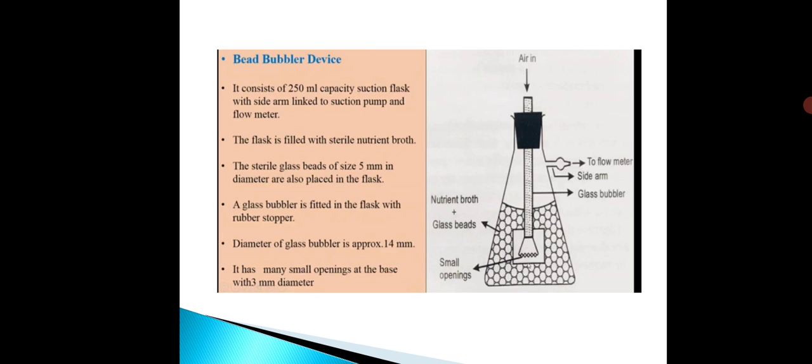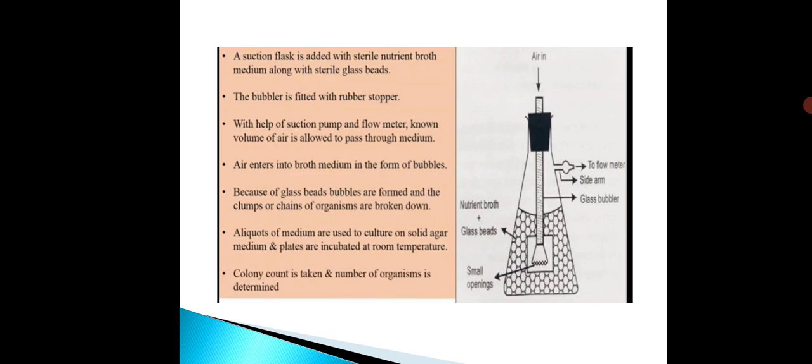This is a typical diagram of the bead bubbler device, which consists of a 250 ml flask connected with the suction pump and the flow meter. The suction pump allows entry of air, and the flow meter controls the flow of atmospheric air. The flask contains sterile nutrient broth along with glass beads. The glass bubbler or glass tube is fixed with the rubber stopper at the top, with small openings at the bottom.